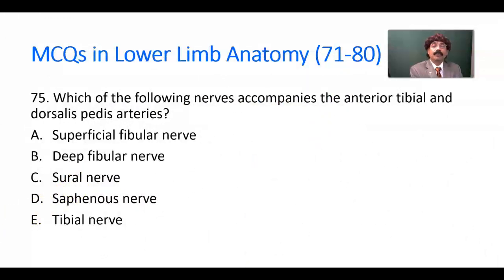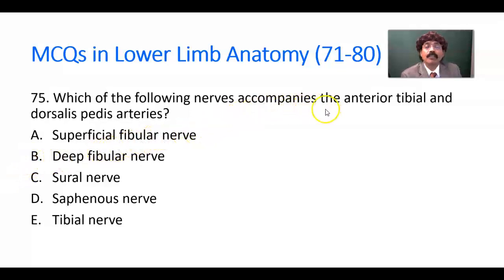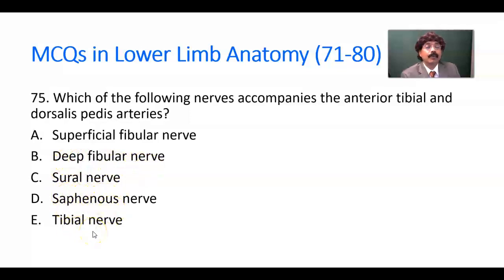Question number 75. Which of the following nerves accompanies the anterior tibial and dorsal pedis arteries? Options: superficial fibular nerve, deep fibular nerve, sural nerve, saphenous nerve, tibial nerve. The answer is the deep fibular nerve.